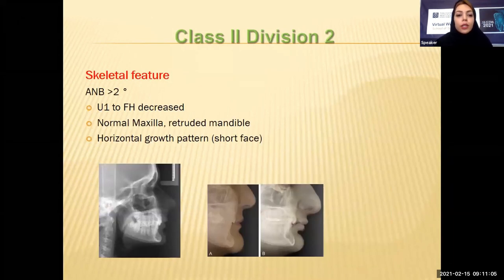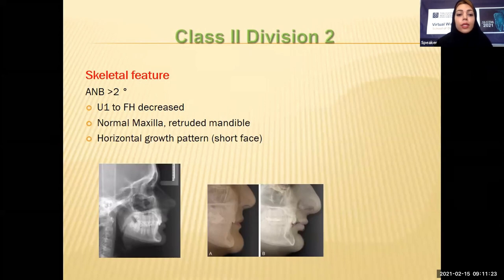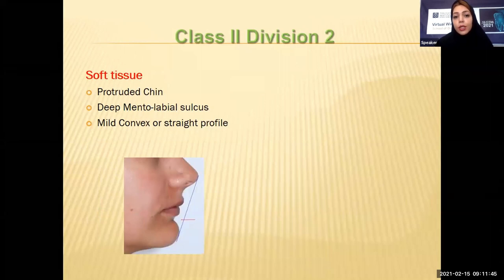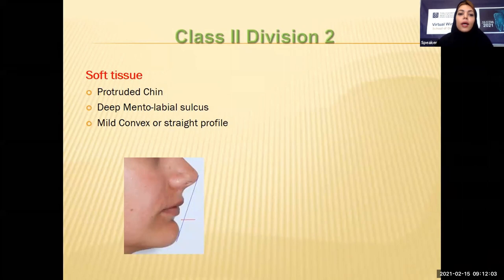Skeletally, these patients have an ANB larger than 2 degrees, but the upper incisor to Frankfurt plane angle is decreased. The position of the maxilla is usually normal, while the mandible is problematic and retruded. In vertical dimension, they usually have a horizontal growth pattern — meaning they are short-faced. In soft tissue, the most important thing is that they usually have a protruded chin with a deep mental labial sulcus. This is why many class 2 division 2 patients are not aware they have mandibular deficiency — the prominent chin compensates for the mandibular position. Their profile is less convex than class 2 division 1, and sometimes they even have straight profiles.